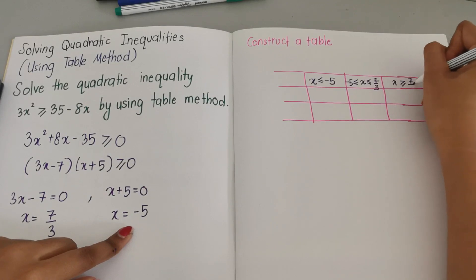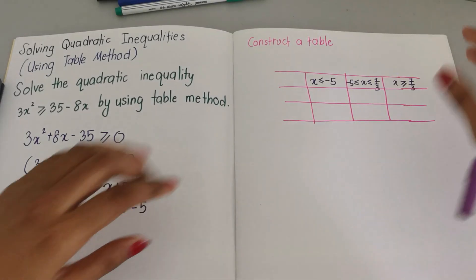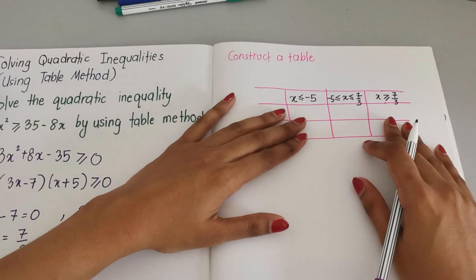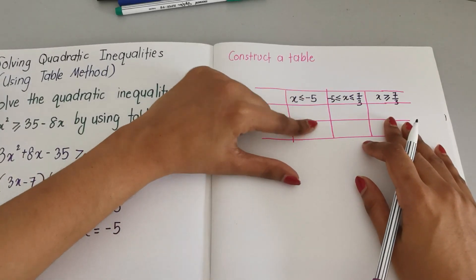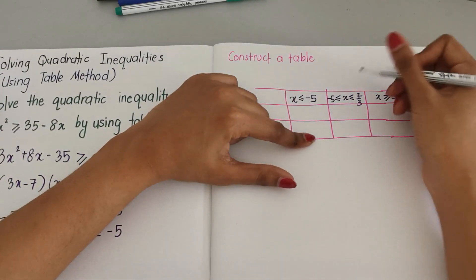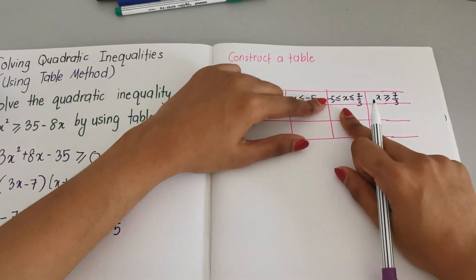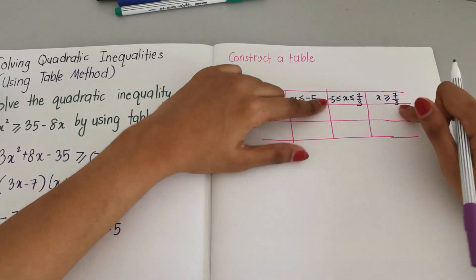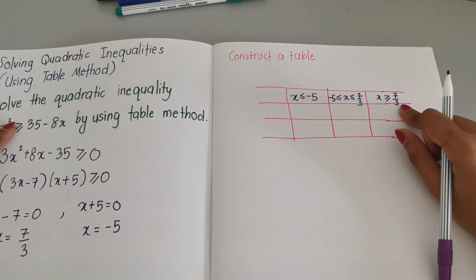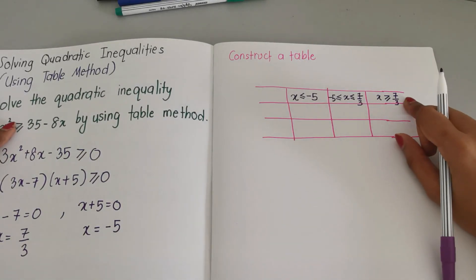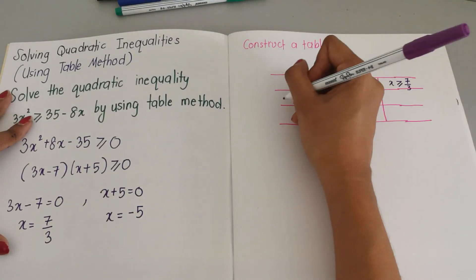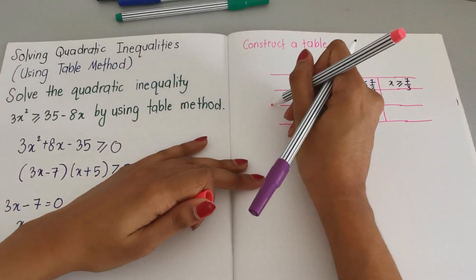The third column we are going to write x greater than and equals to 7 over 3. The negative one we will write in this column, and then we're going to write both of them but the x inequality is going to be in the middle.